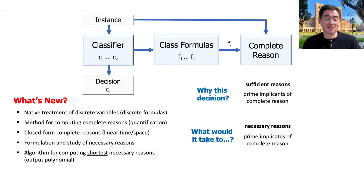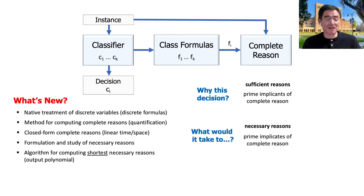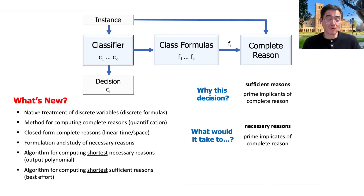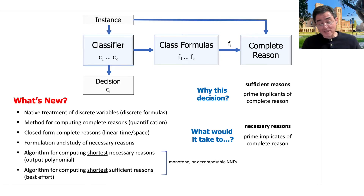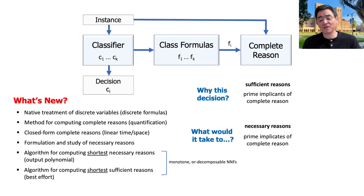The final portions present two algorithms. One for computing the shortest necessary reasons — since there can be an exponential number of sufficient and necessary reasons, focusing on shortest ones is useful. Interestingly, this algorithm turns out to be output polynomial. We also have an algorithm for computing the shortest sufficient reasons; it's a best-effort algorithm but quite effective in practice. The reason it's best-effort is that provably this is a hard task — it can be hard to even find one single shortest sufficient reason. Both algorithms apply for any complete reason in the form of a monotone or decomposable NNF, which is a pretty broad class.